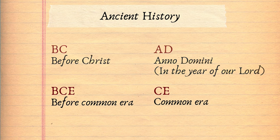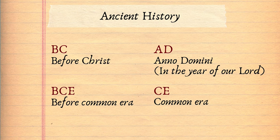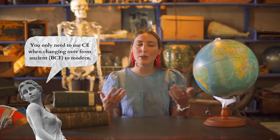It's becoming commonplace today to use BCE and CE because BCE and BC actually refer to the same time period, as do AD and CE. If you're looking at modern timelines though, it's not necessary to put these terms. We know that 1945 means 1945 in the Common Era.